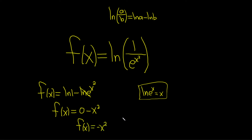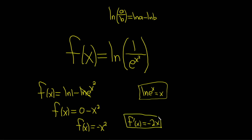And now we just need the derivative. f prime of x is equal to, just using the power rule, minus 2x. And that is the final answer. I hope this video has been helpful.